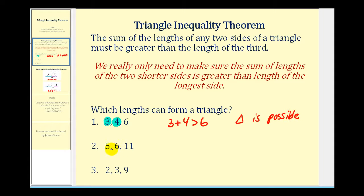For number two, the two shorter sides are five and six. Is five plus six greater than 11? Well, it's not. It's actually equal to 11, so a triangle is not possible.